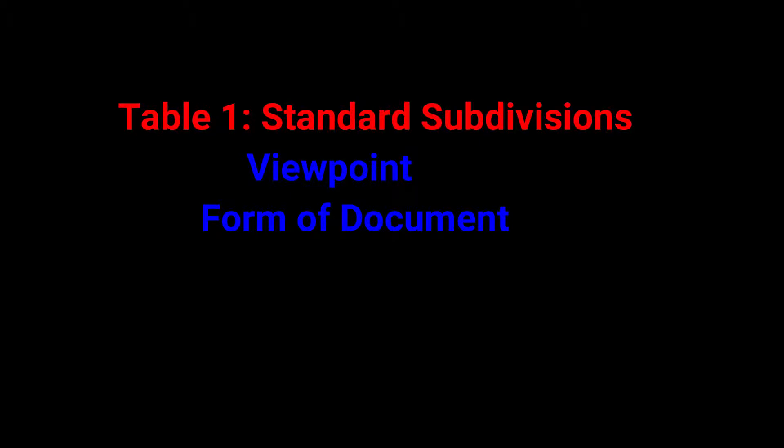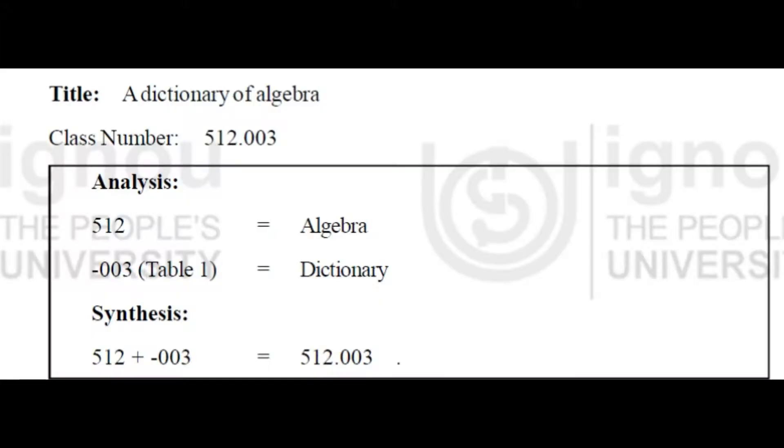For example, the viewpoint of a document represents whether it is a history, research, or philosophy. The form of a document means serials, conference proceedings, dictionaries, anthologies, or other document forms. In the tables, each number begins with a hyphen.